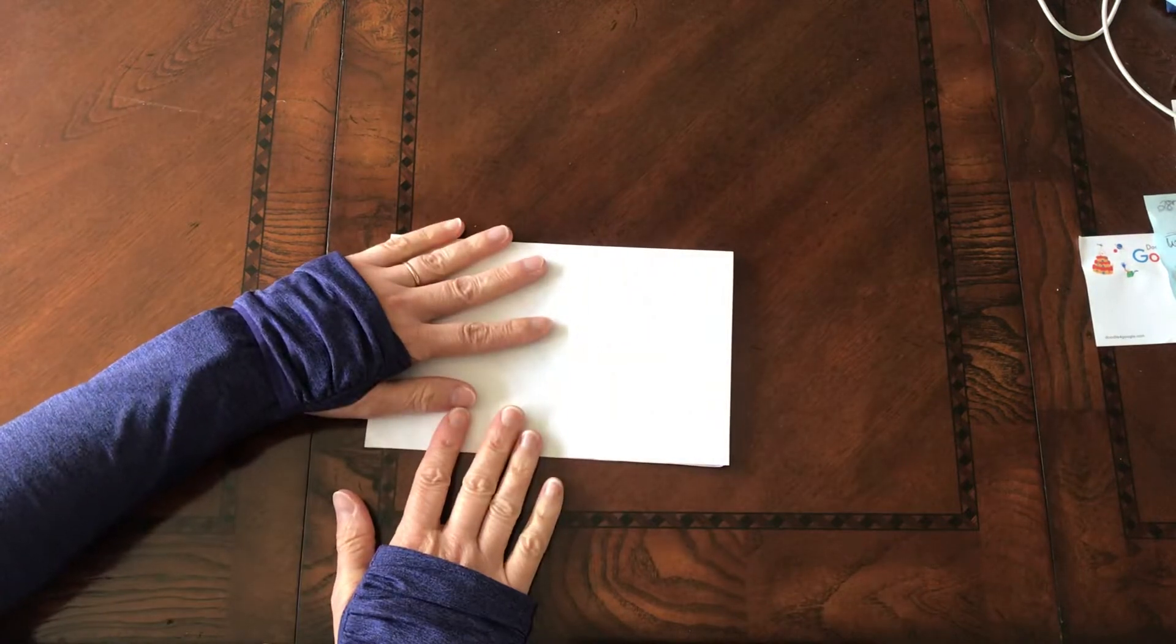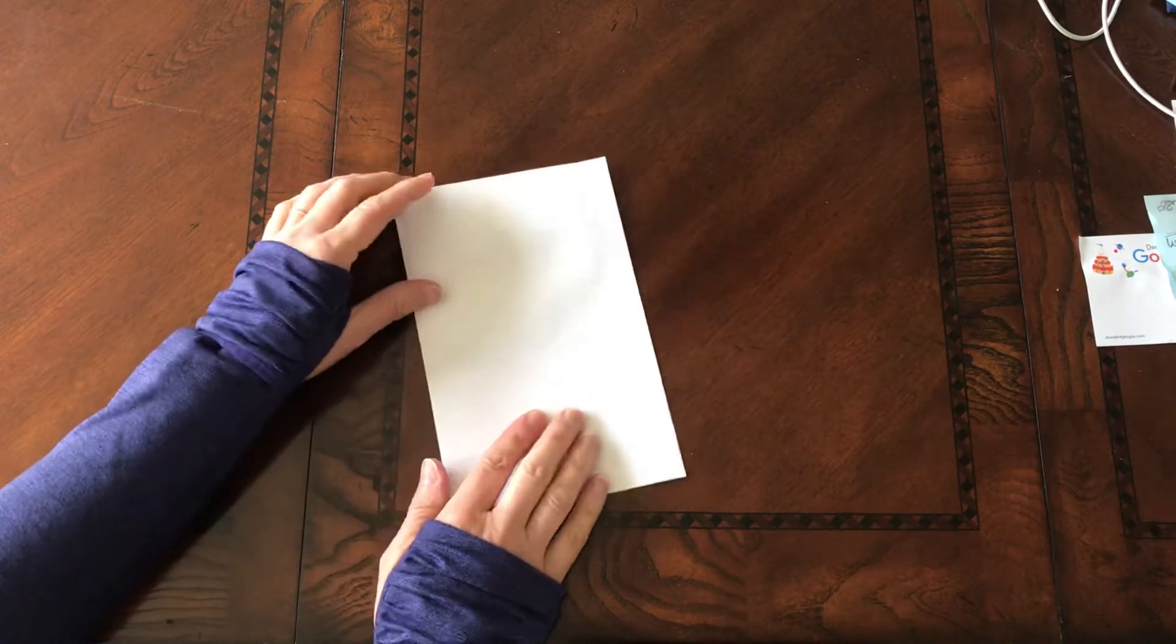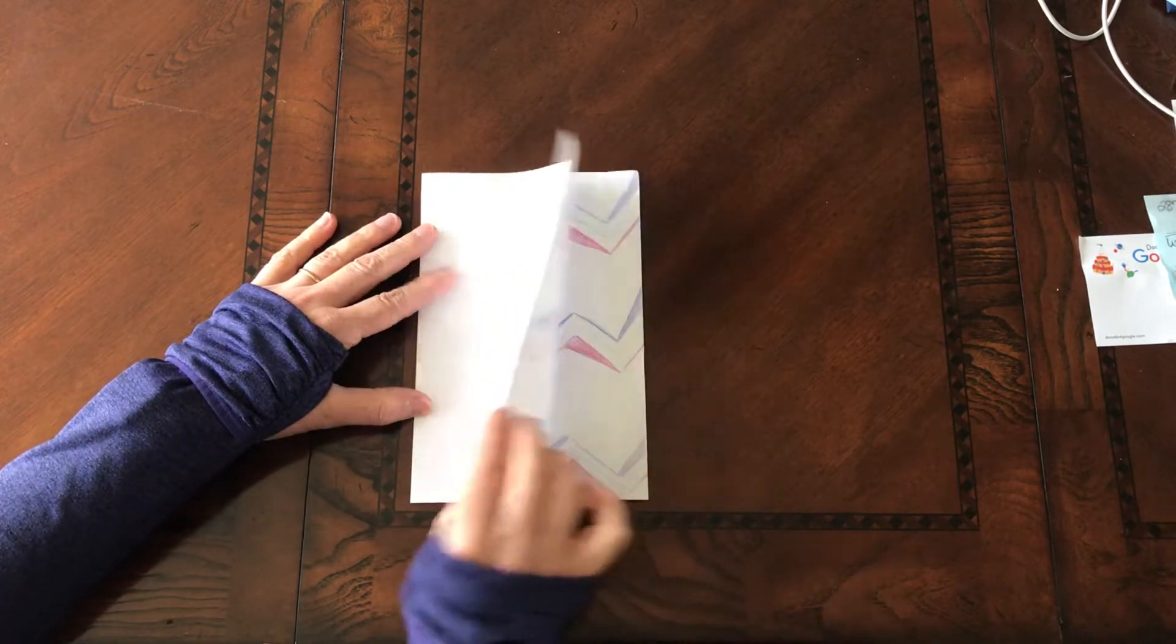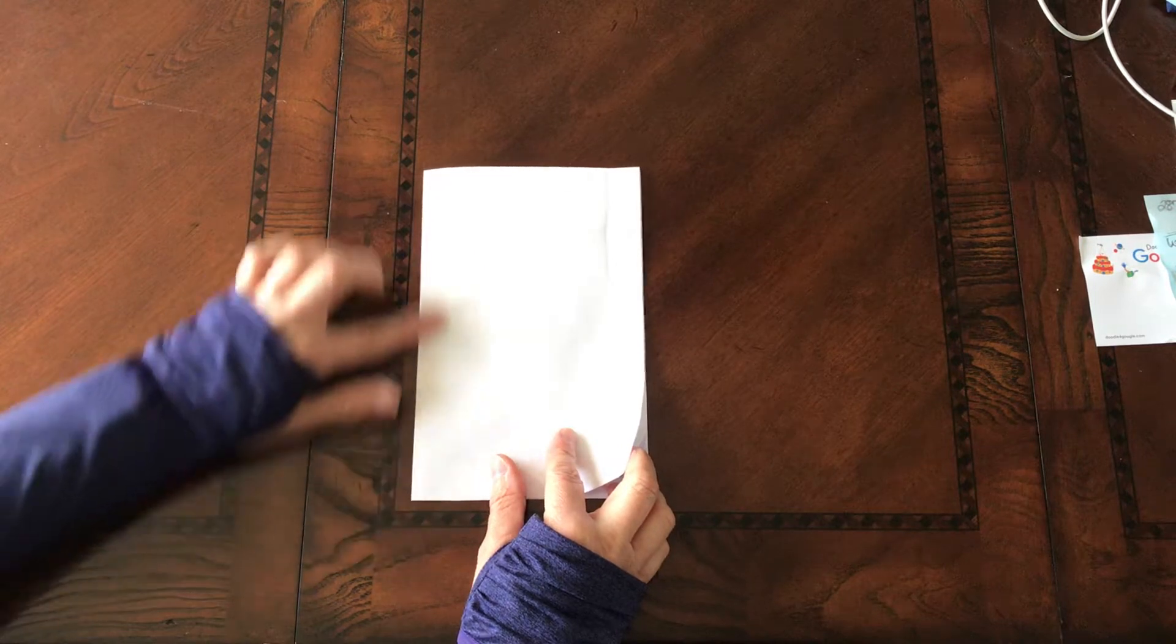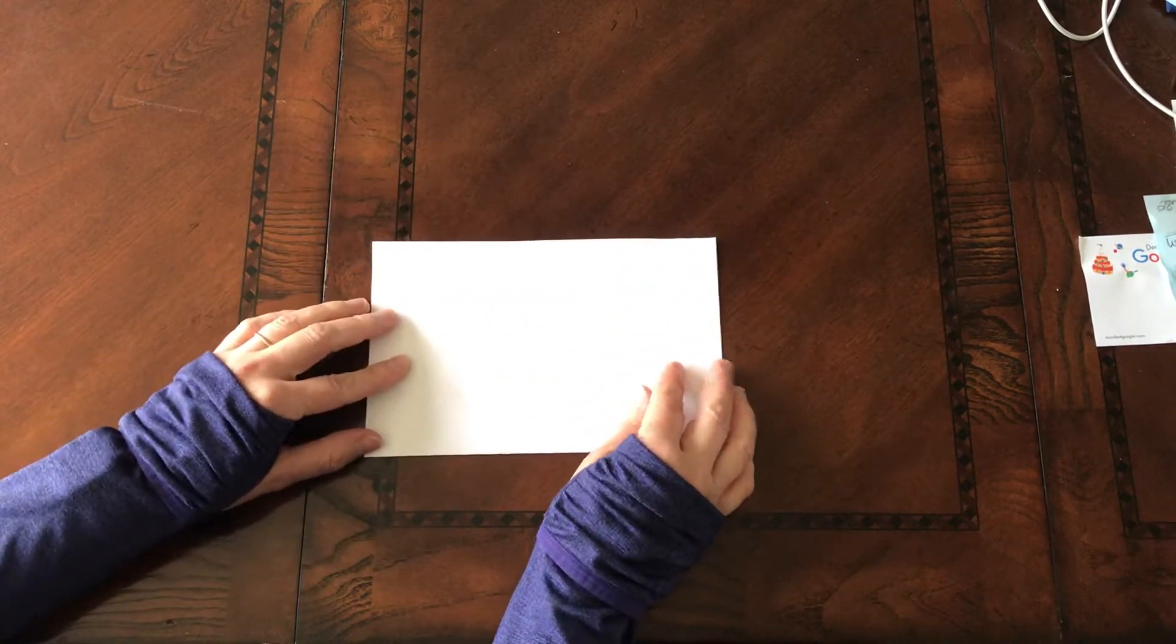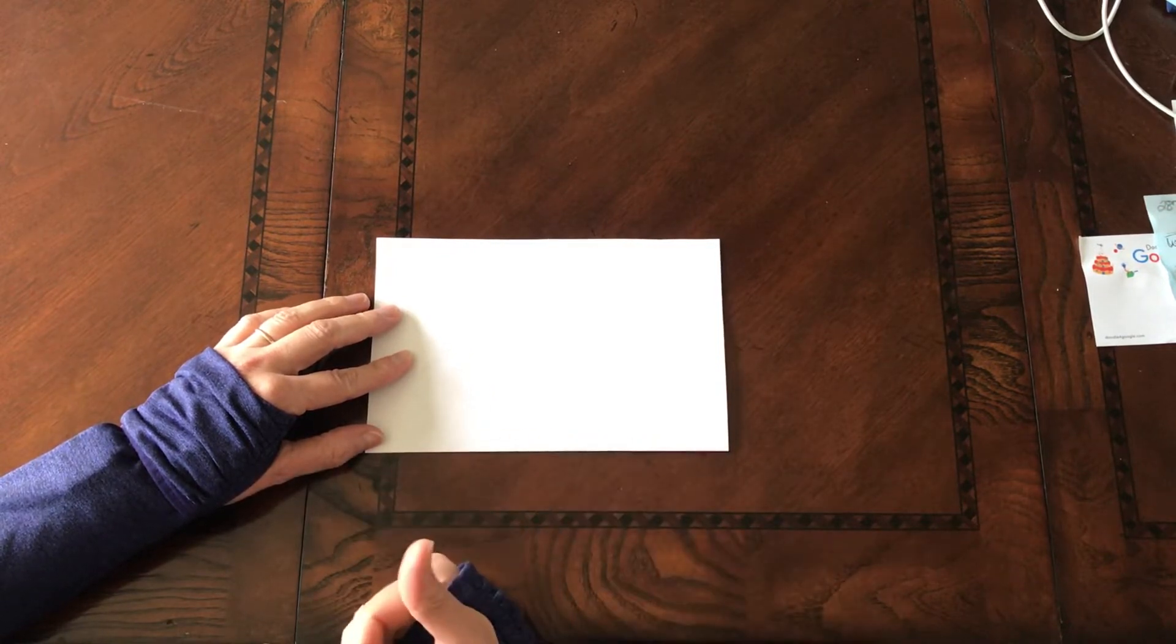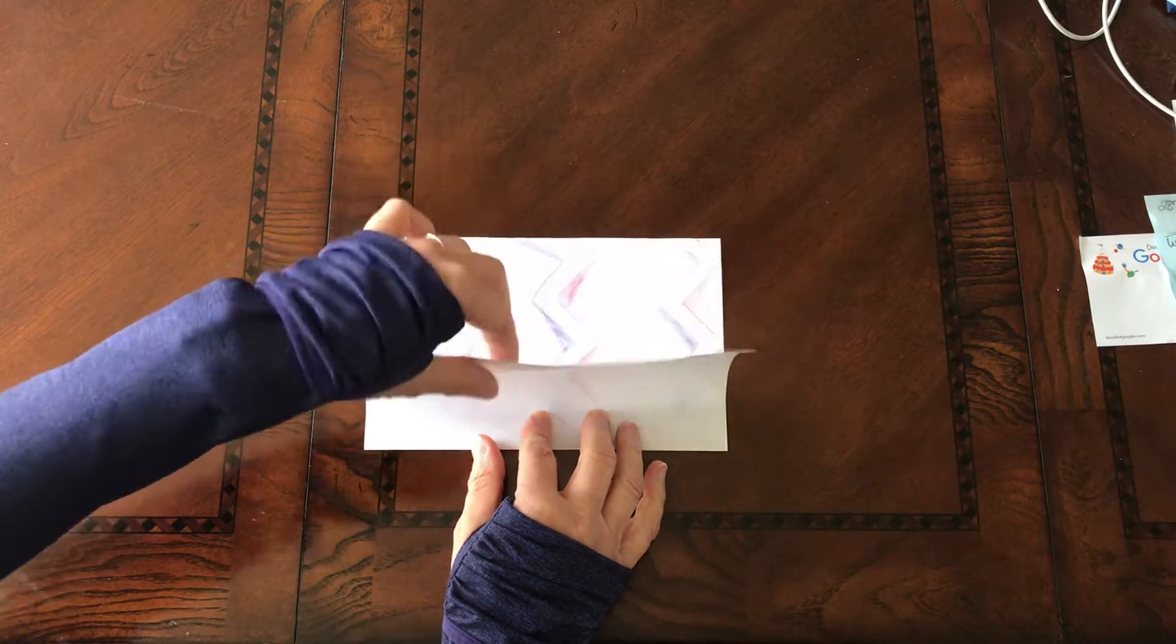If you folded your paper in half correctly, you are then going to turn your paper, and you might notice it should open up like a book. I'm going to take this folded side and put that folded side towards my tummy, so this fold is facing me and opening up away from me.